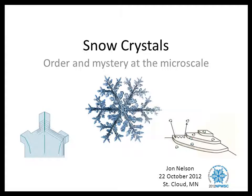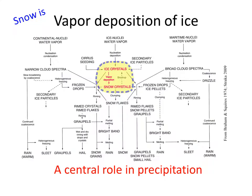Why study snow crystal shape? Vapor deposition is a crucial part of lots of precipitation types. In this diagram from a cloud physics text, it's right smack in the middle. For example, the snow crystals could just fall to the ground unchanged — great for skiers, especially if they're dendrites. But if they're needle crystals, not so good for traffic.